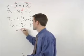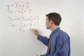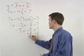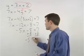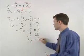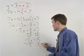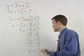Which simplifies to negative 5x minus 8 equals 7. Add 8 to both sides, and negative 5x equals 15. Divide both sides by negative 5, and x equals negative 3.